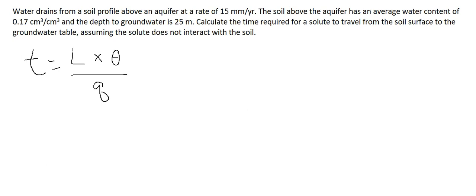In this case, we are given each of these variables in the problem. However, before I plug these numbers in, I want to point out that the units for the thickness of the soil column, 25 meters, are different than those for the flux, which is given in millimeters per year. So before I plug in these values, I'm going to convert the depth to groundwater from 25 meters to millimeters.